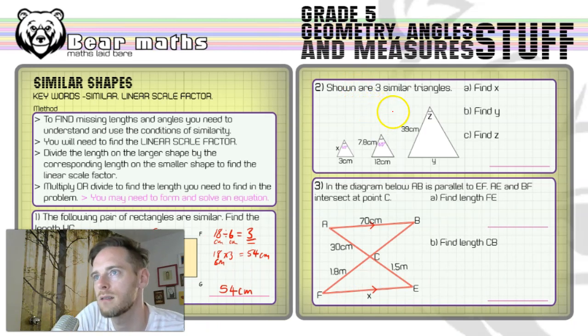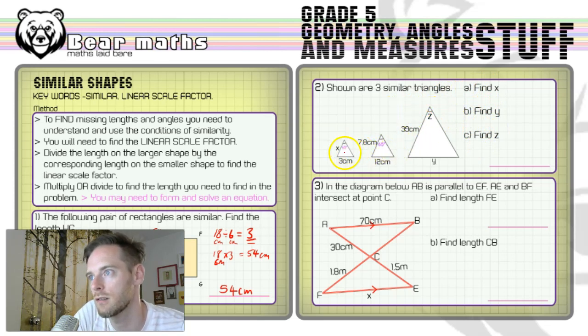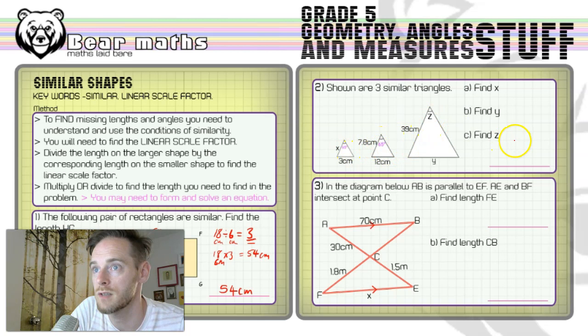Now number two, you've got three similar triangles. You've got to find X, you've got to find Y, you've got to find Z. Z is probably the easiest one to find because in similar triangles, the angles are always going to be the same. It states they're similar, so this is 65, this is 65. So Z is also going to be 65 degrees.